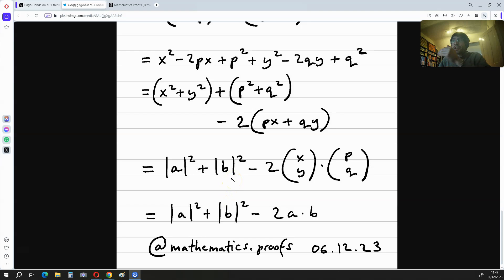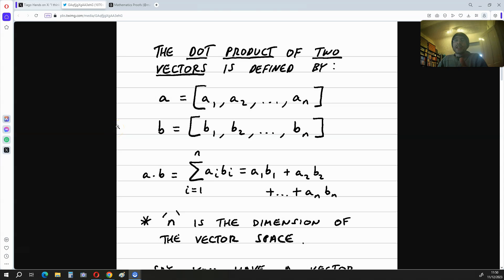Hi, in this video I'm going to be showing you why, if you have the magnitude of a minus b squared, you get the magnitude of a squared plus the magnitude of b squared minus 2ab. To show that this is true, we need to know two things.